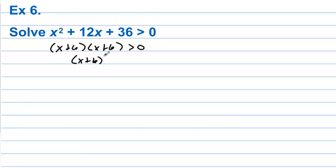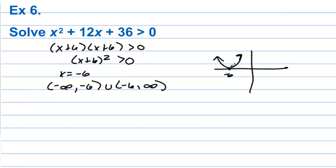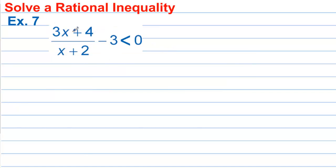Example 6: Let's factor this into (x plus 6)(x plus 6) is greater than 0, which is (x plus 6) squared is greater than 0. No matter what you square, it's going to be greater than 0, so we can't have x equal to negative 6 because that would make it equal to 0. The solution is negative infinity to negative 6 (don't include negative 6), union with negative 6 to infinity. The parabola has vertex at negative 6, 0, opens up, so every value is positive except that one point.